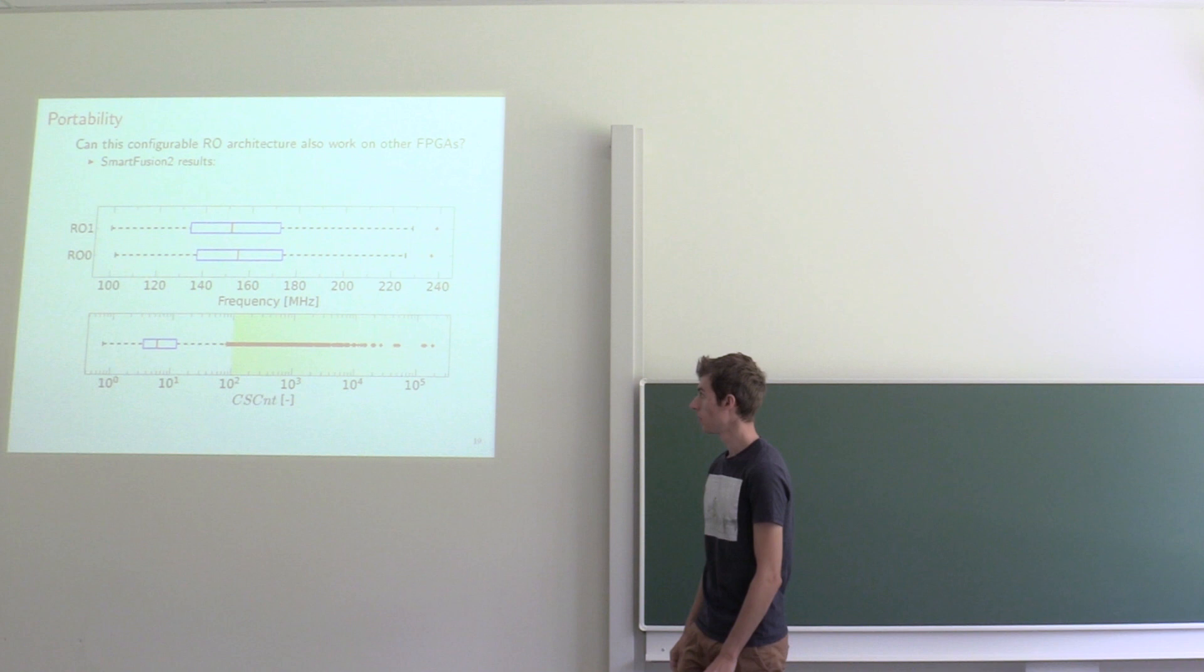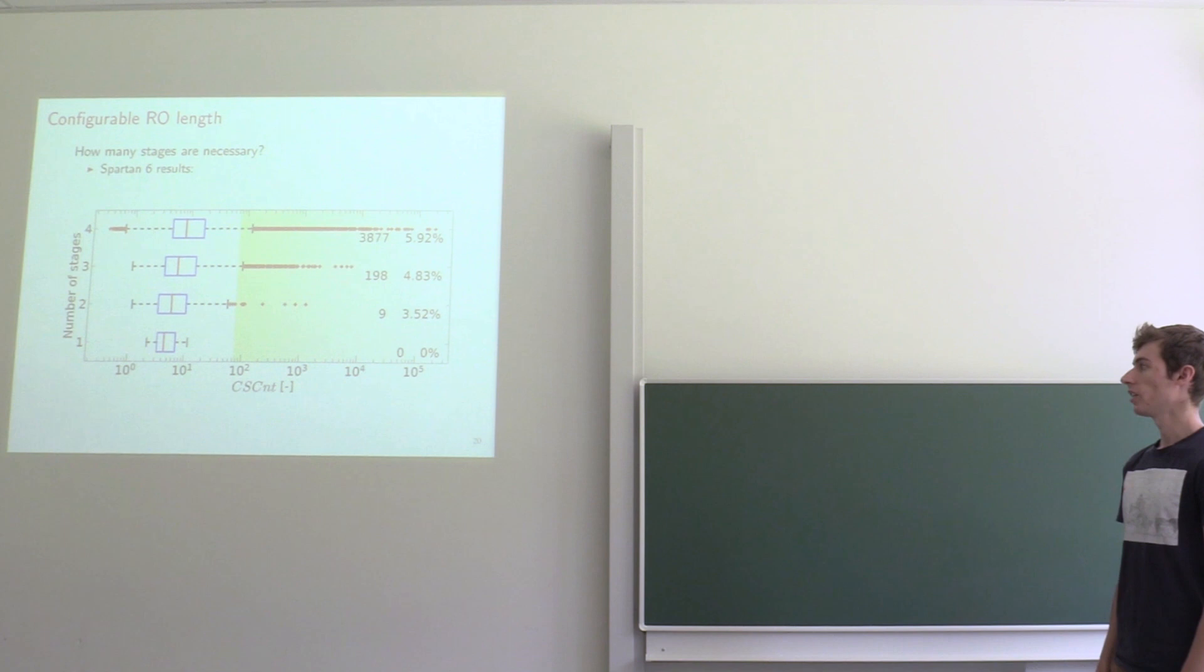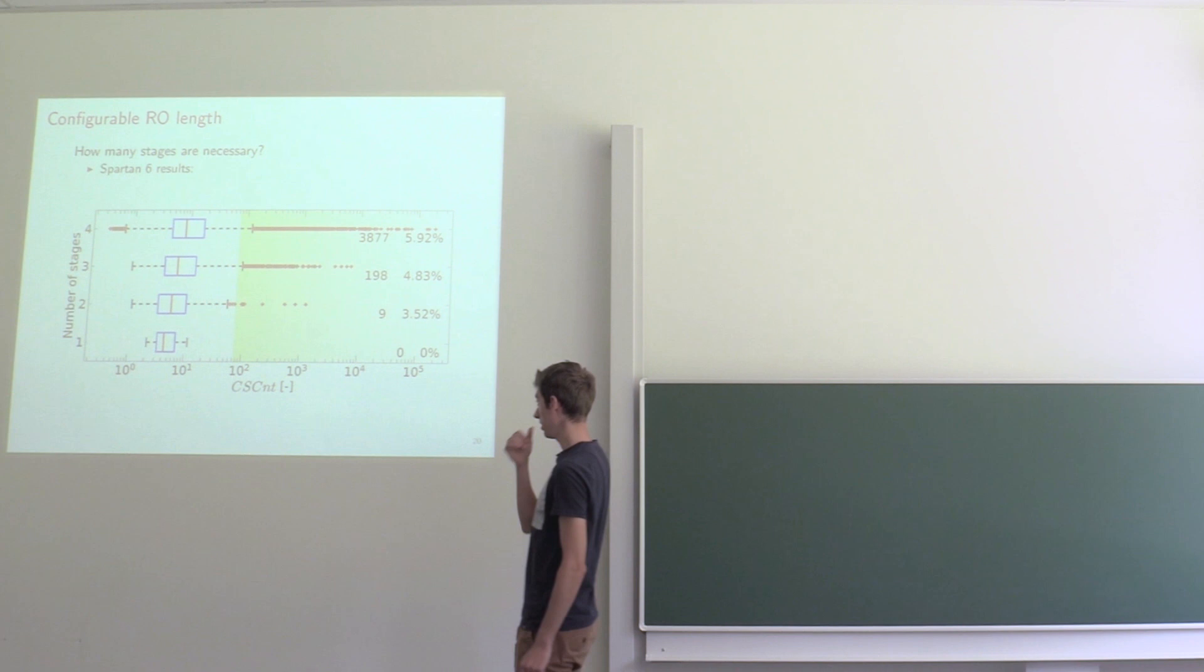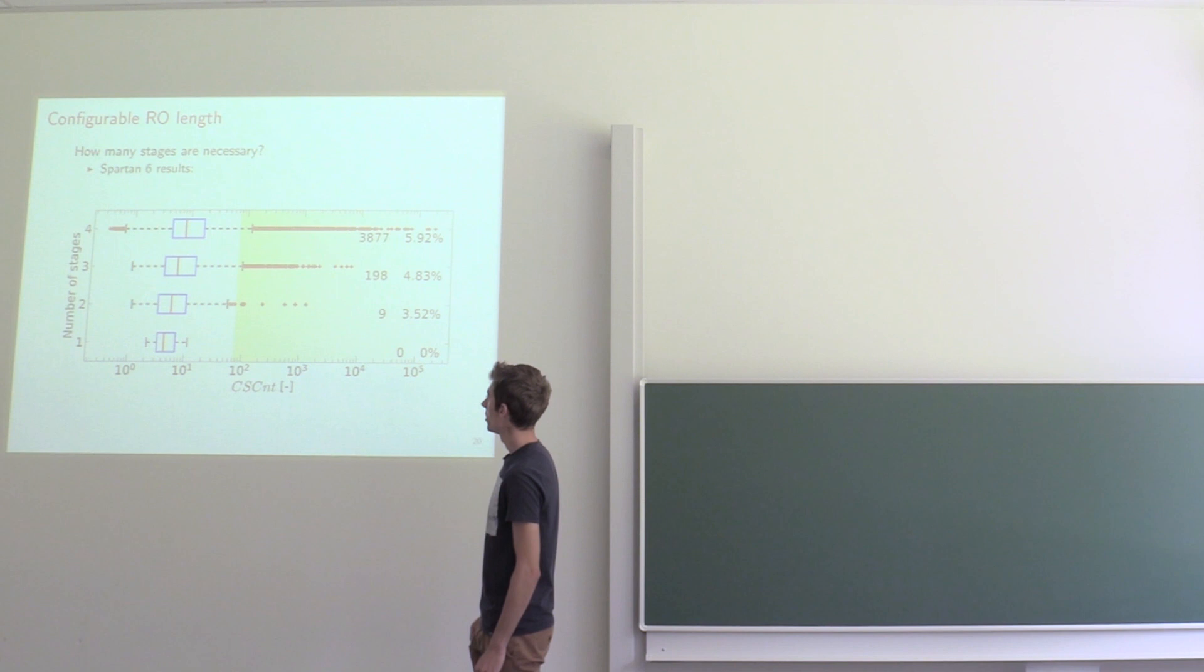In our last experiment, we checked how many stages we needed. One stage only gives 16 configurations, which is clearly not enough to reach a counter value in the range we needed. Two stages was in theory enough,